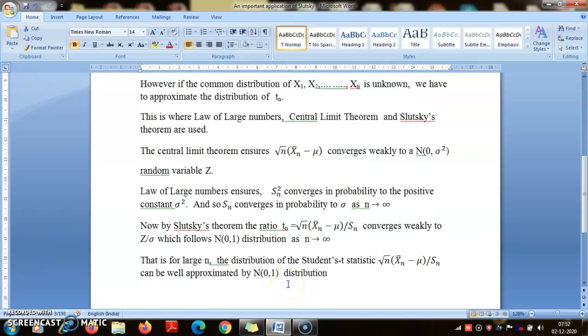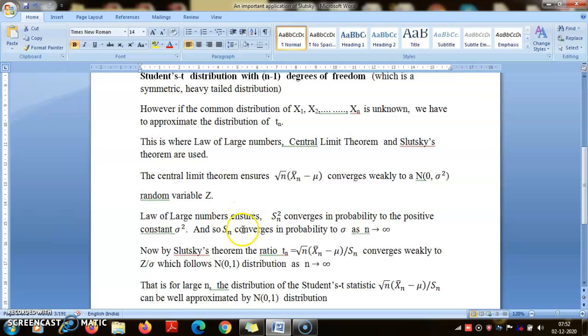Now comes Slutsky's theorem. Before Slutsky's theorem, why does Sn converge to σ? Here is this basic result: if Yn, a sequence of random variables, converges to a constant C, then for any continuous function G, G(Yn) will converge in probability to G(C).